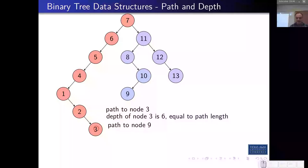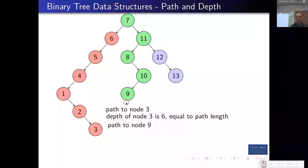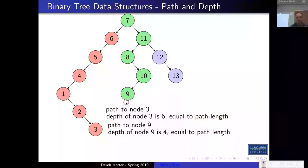Another example: the path to 9 would go from 7 to 11 to 8 to 10 to 9, and would have a depth of 4. So when we talk about depth, that's equal to the path length — just the definition of it.